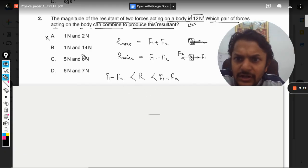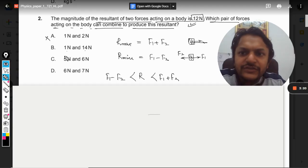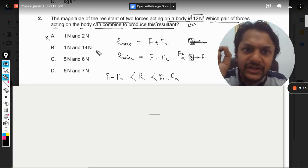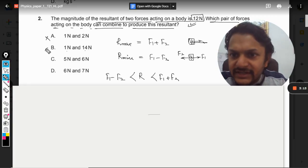Now see, one force is 14, one is 1. So the maximum can be 15 and minimum can be 14 minus 1, that is 13. We need 12. So even this is wrong.